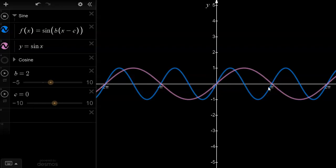So if b doesn't represent the period, what does the b value represent?